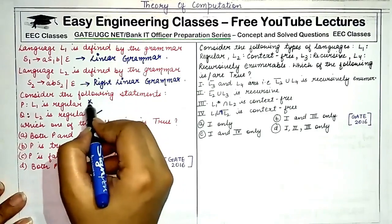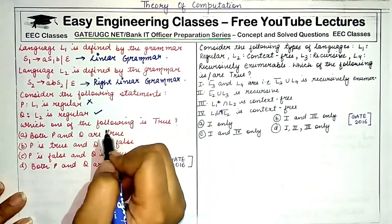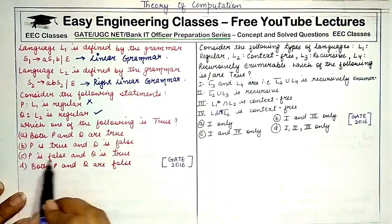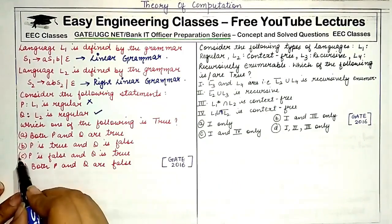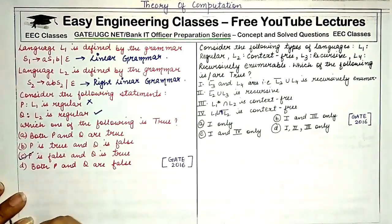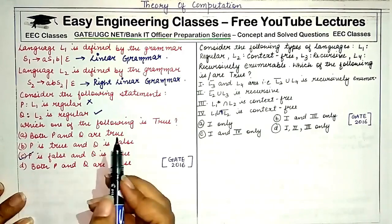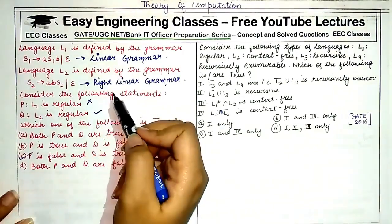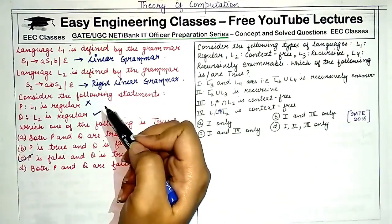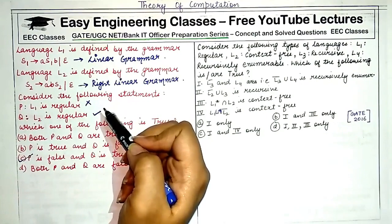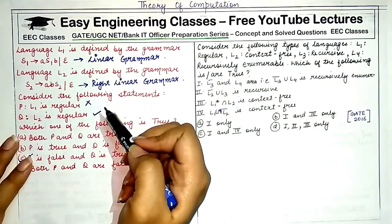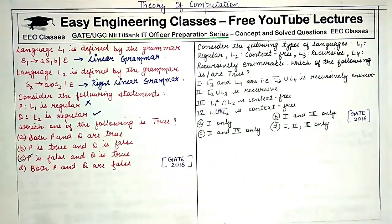Only L2, generated by the second grammar, is a regular language. L1 is only a linear grammar and is not regular. So P is false and Q is true — option C is correct. You need to remember the basics of regular languages, context-free languages, context-sensitive languages, and so on.